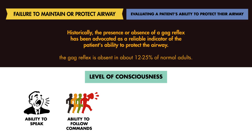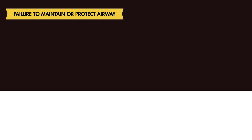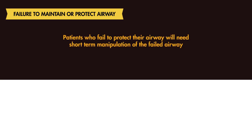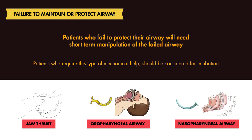For example, do they follow commands? Are they unconscious? Additionally, you want to observe your patient to see if they're able to swallow and tolerate their oral secretions. If they're not, then the patient is likely not maintaining a safe and patent airway. Many of these patients will require short-term manipulation, such as a jaw thrust or placement of an oral or nasal trumpet. But in general, a patient who requires this type of mechanical help to maintain their airway probably needs to be intubated.